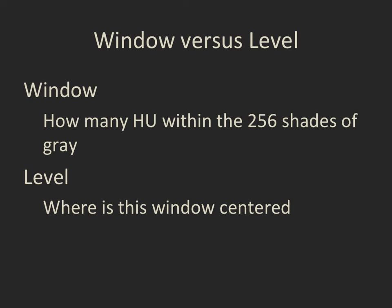So we can display every CT scan using two values. The window, which is how many Hounsfield units we concentrate within those 256 shades of grey — that can be a very narrow one such as in the brain, or a much wider one as we use for lungs and bone. The level is where on the Hounsfield scale of minus 1,000 to plus 1,000 we centre that window.